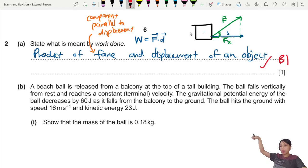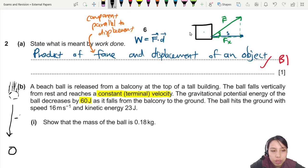Beach ball from the top of the balcony. Release. The ball falls vertically and reaches a constant terminal velocity. The gravitational potential of the ball decreased by 60 joules. The ball is going from up here, drop down to the bottom, and you lose 60 joules GPE. The ball hits the ground with 16 meters per second and kinetic energy of 23 joules. Show that the mass of the ball is 0.18 kg.